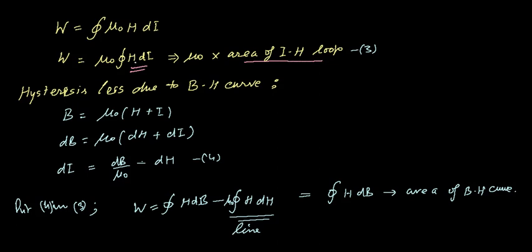HdI means area, because I have considered here a closed path. So the area of IH loop—hysteresis is lost due to the BH curve. B is equal to μ₀H plus I, and this was the result.